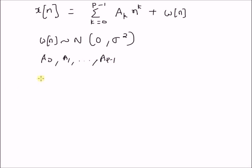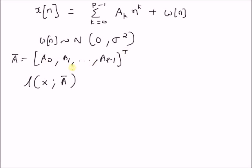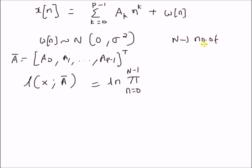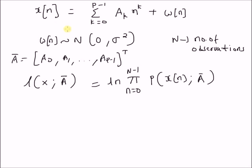Now we want to derive a CRB for these unknown parameters — the variance of these unknown parameters. The log-likelihood function corresponding to this model with unknown parameters is L(x; a_bar), where a_bar is the vector consisting of all unknown parameters from a_0 to a_{p-1}. The log-likelihood function is given by the logarithm of the product over n = 0 to N-1, where N is the number of observations, of the probability distribution of each observation. Since w(n) is Gaussian, so is x(n).